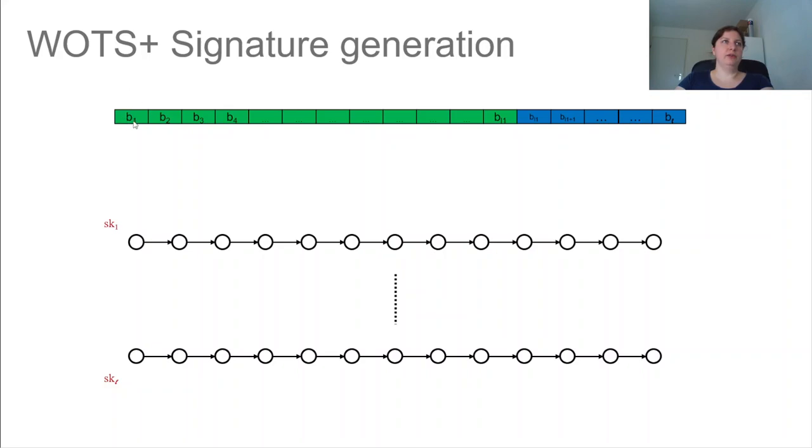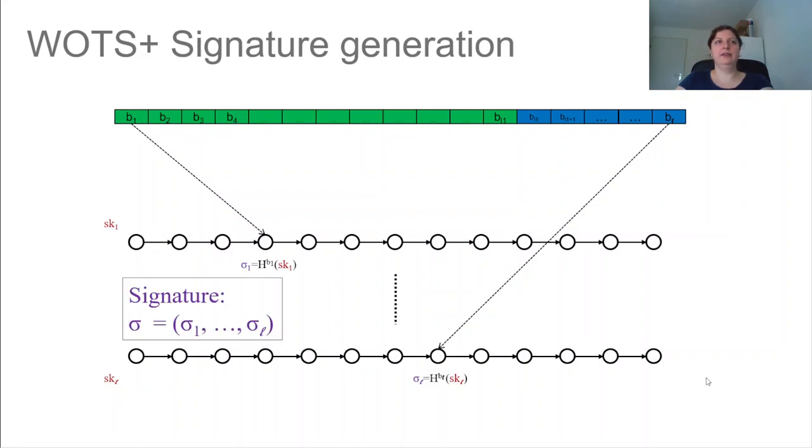And now we want to sign. So we have our secret key, which are these nodes in the beginning, each one from one up till L. And now if we want to sign the message, we start at the first base W value. And we map this value to a place in the secret key one chain. And specifically for instance, if this value is three, then we would compute the third node after the secret key with this value. And we repeat this process for all chunks.